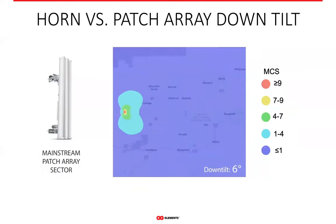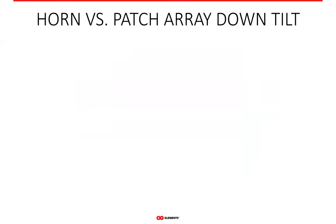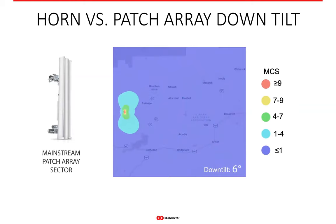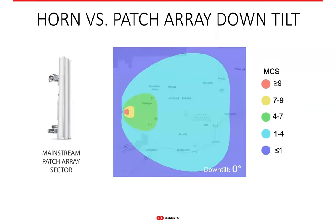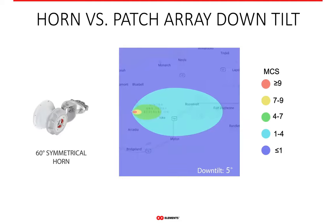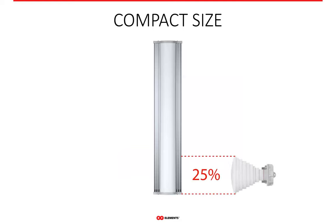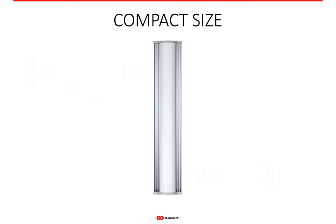Down tilt is a huge factor influencing coverage area, at least with patch array sectors. Anything beyond a few degrees of down tilt makes a patch array practically useless — you completely lose coverage of distant areas at just four to six degrees. With horns, down tilt is an added functionality. The coverage area smoothly shrinks while maintaining its shape. By changing the down tilt, you can dynamically adjust sector coverage as you wish, as well as decrease the noise level — the bigger the down tilt, the less noise you will see.